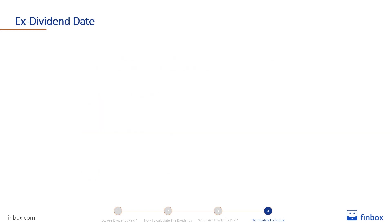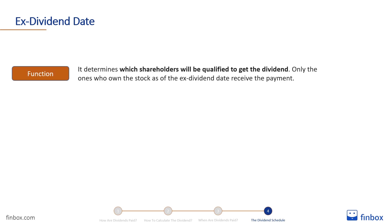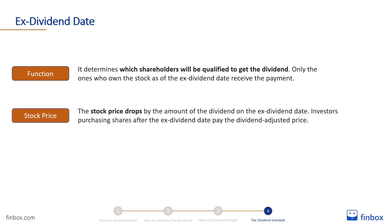The ex-dividend date is the most important of the four dates because it determines which shareholders will be qualified to get the dividend. Only shareholders who own the stock as of the ex-dividend date receive the dividend. The stock price is adjusted by the amount of the dividend on the ex-dividend date. Since only investors who own the stock before the ex-dividend date receive the dividend, investors purchasing shares after that date pay the dividend-adjusted price.